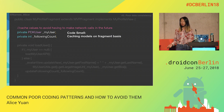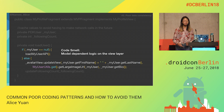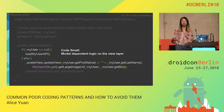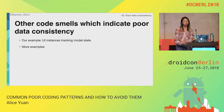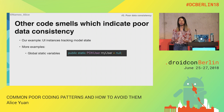Our first code smell is that we're caching models on a fragment basis. This leads us to maintaining model consistency through different hacks in order to get this to work. Our second code smell is that we have model-dependent logic in the view layer. We have this check to see if my user is null, and otherwise I can update the view. This logic is really ugly and is also going to introduce bugs.